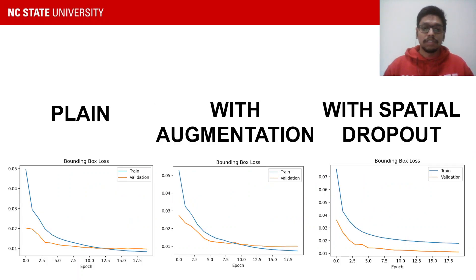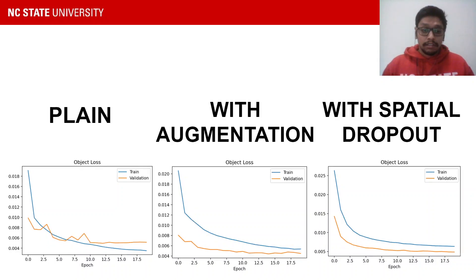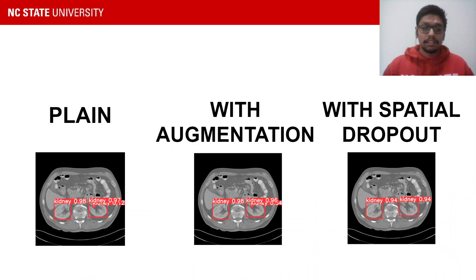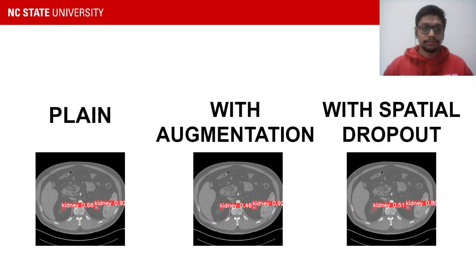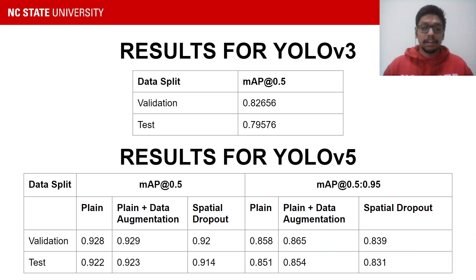This slide shows the comparison of bounding box losses on training and validation datasets of all three models. The next slide shows the comparison of object losses on training and validation datasets of all three models. The first two models show signs of overfitting and the one with spatial dropout does not. The following slides show the bounding box predictions using all three models. The YOLO V5 model trained using data augmentation outperforms all models, including the baseline model.